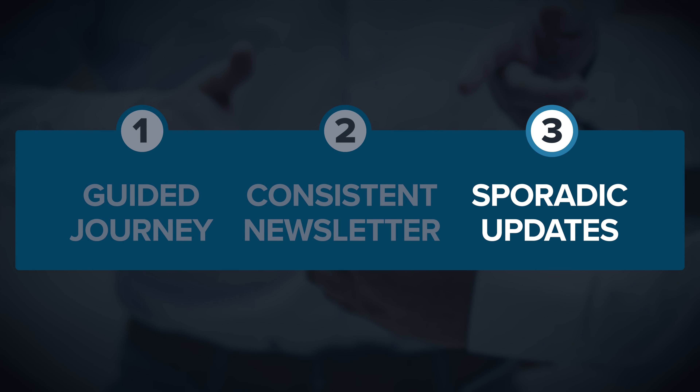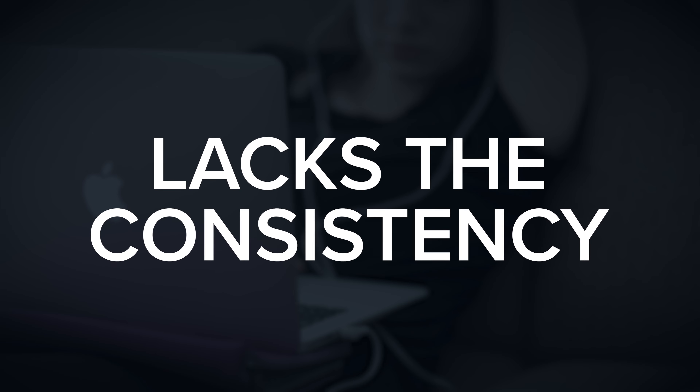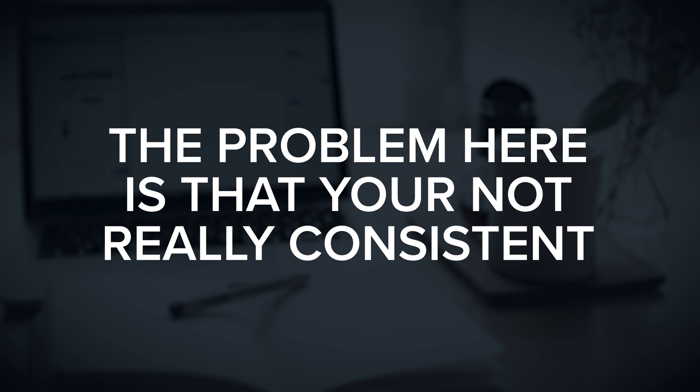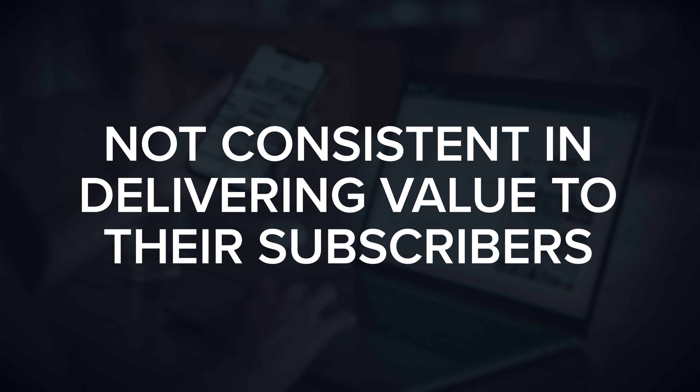Approach number three is sporadic updates — similar to the last approach in that you're sending useful email updates to all subscribers, but lacking consistency. One month you might send two or three emails, the next month none, and then one or two the month after. This is a very common trap that many businesses fall into. They intend to do a good job of sending useful email updates, but get distracted, focus on other things, or just don't have good systems in place.